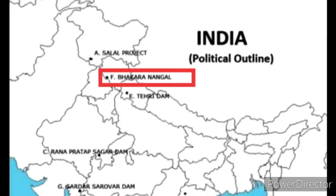The third dam is Bhakra Nangal Dam. Bhakra Nangal Dam is constructed on the Sutlej river and is located in Himachal Pradesh.